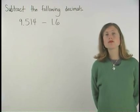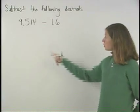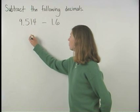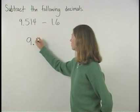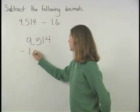To subtract decimals, first line up the decimal point of each number. So here, we have 9.514 minus 1.6.